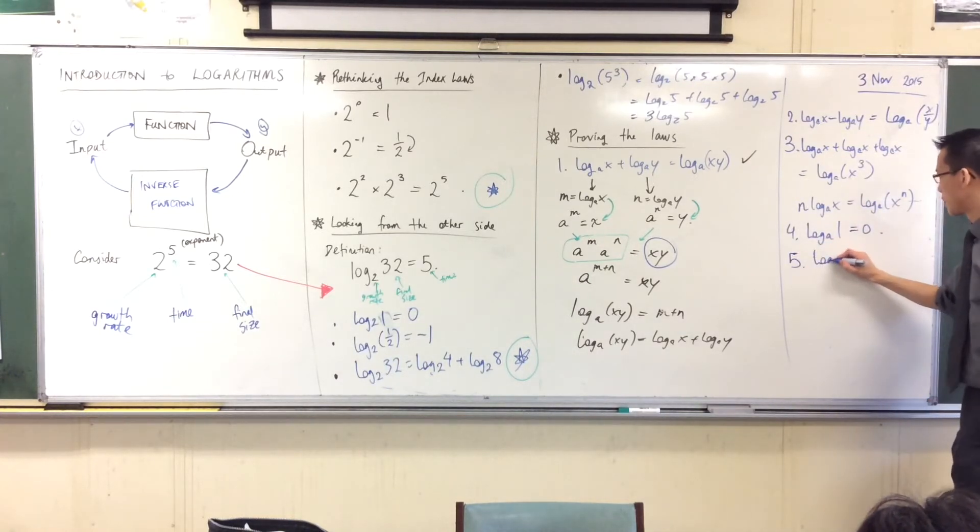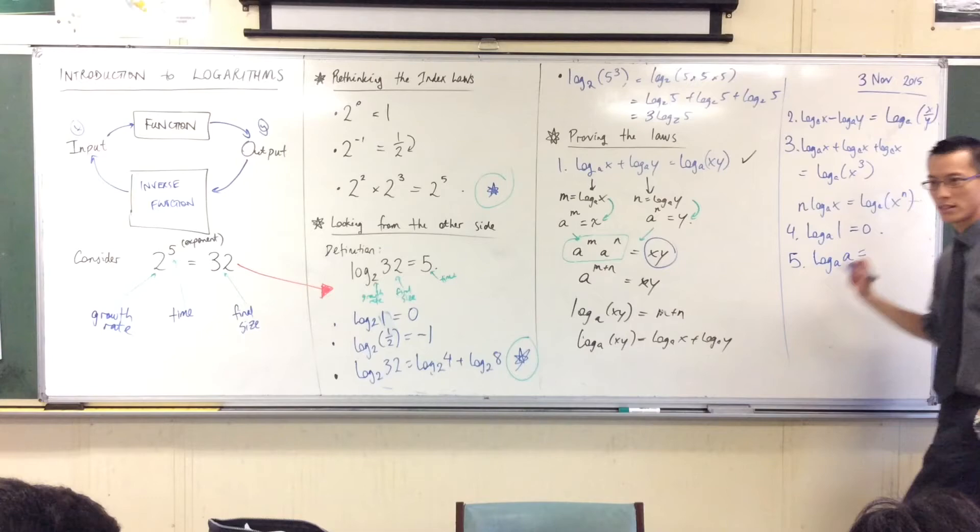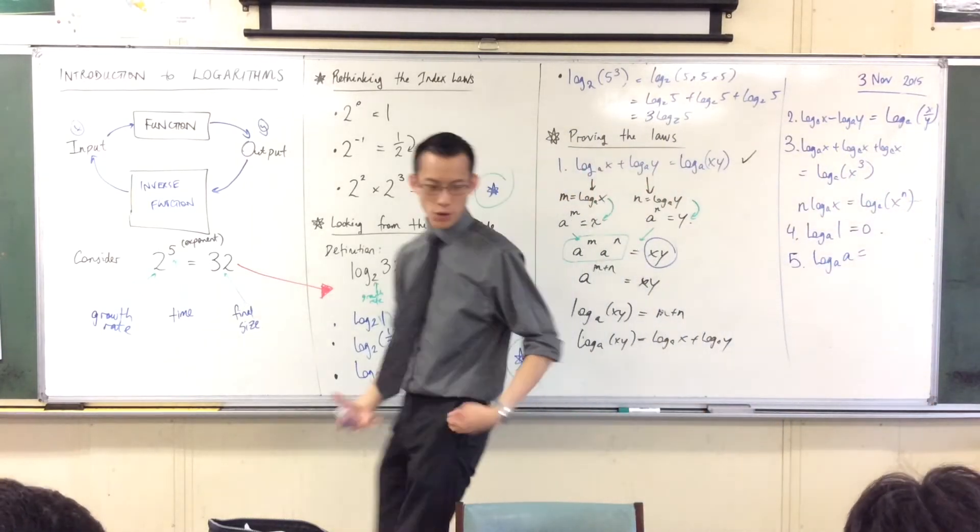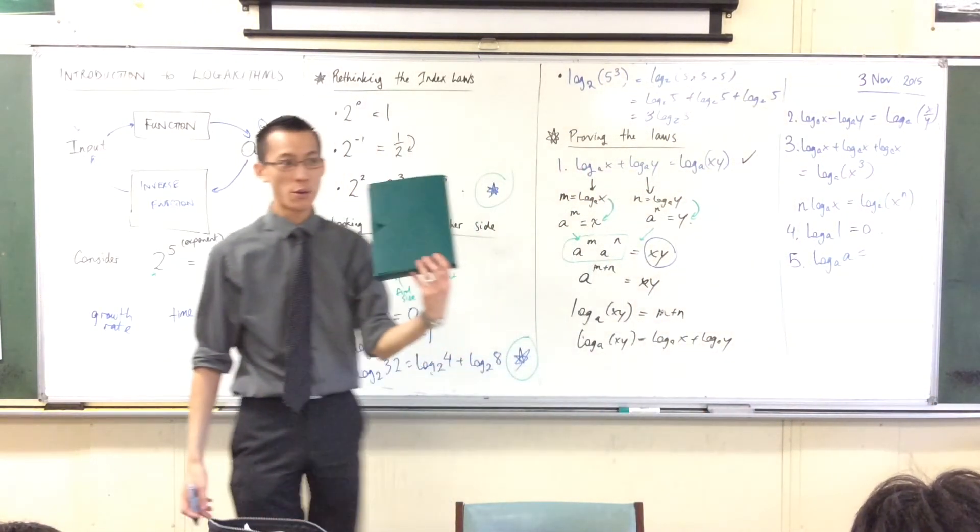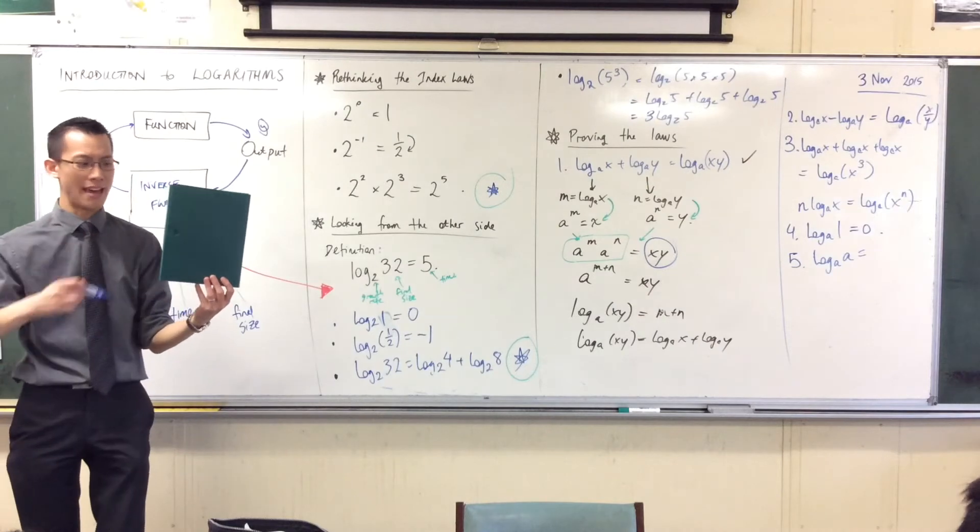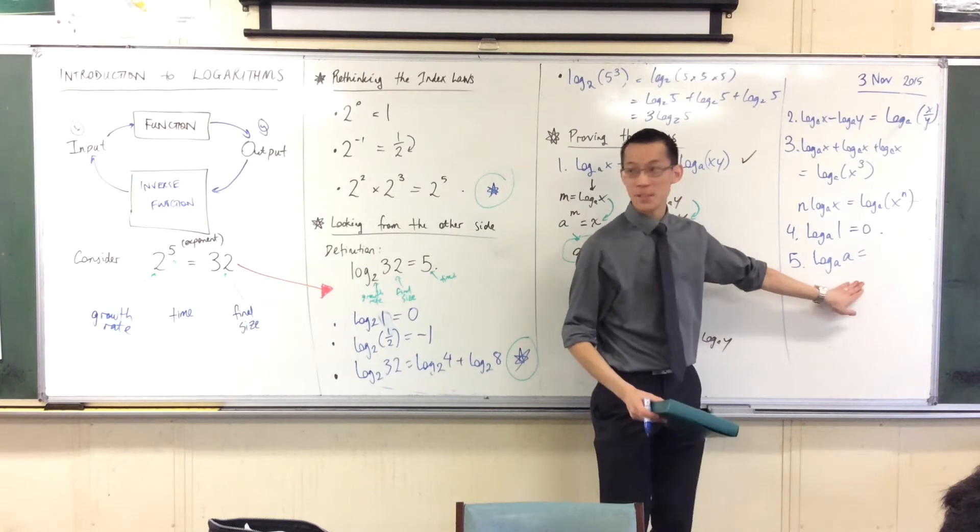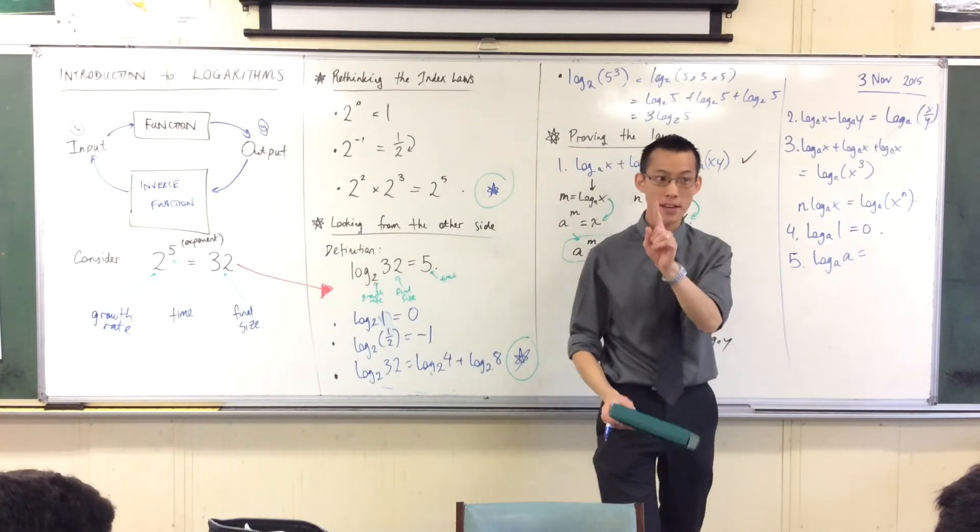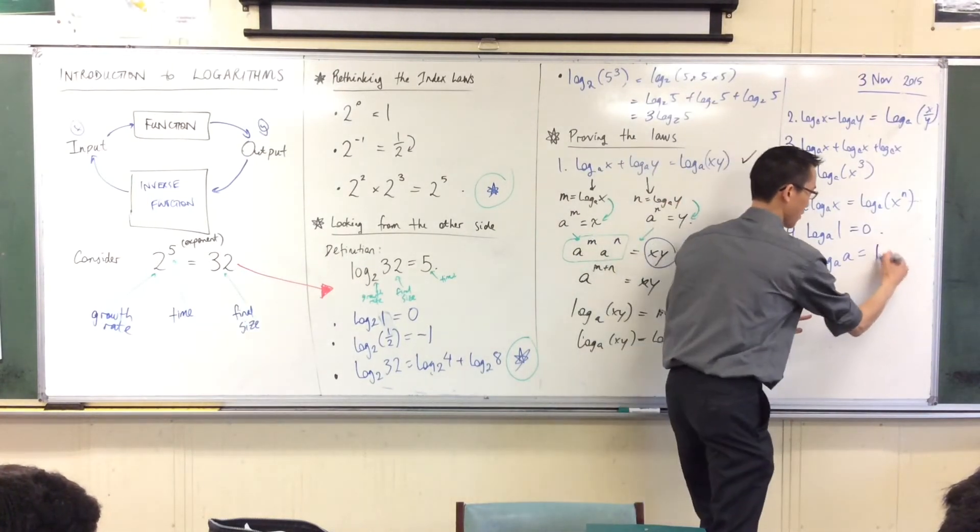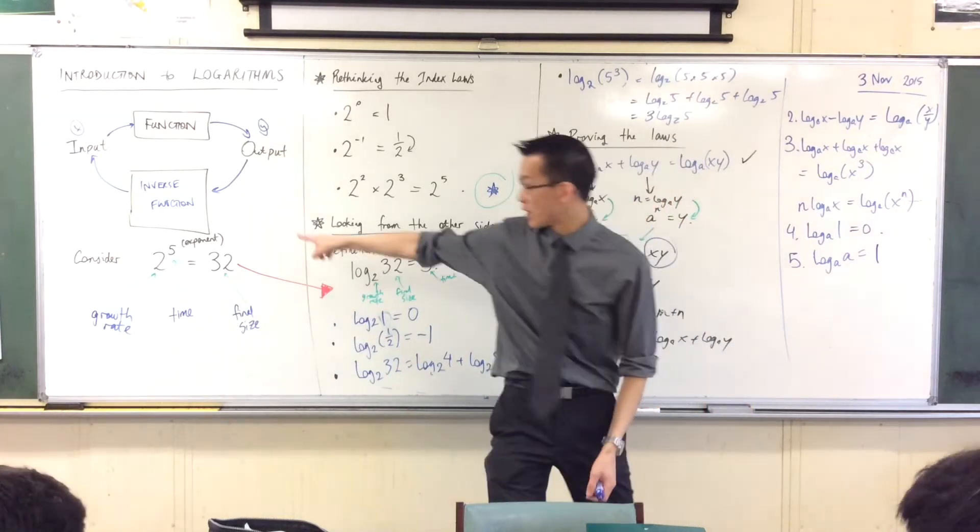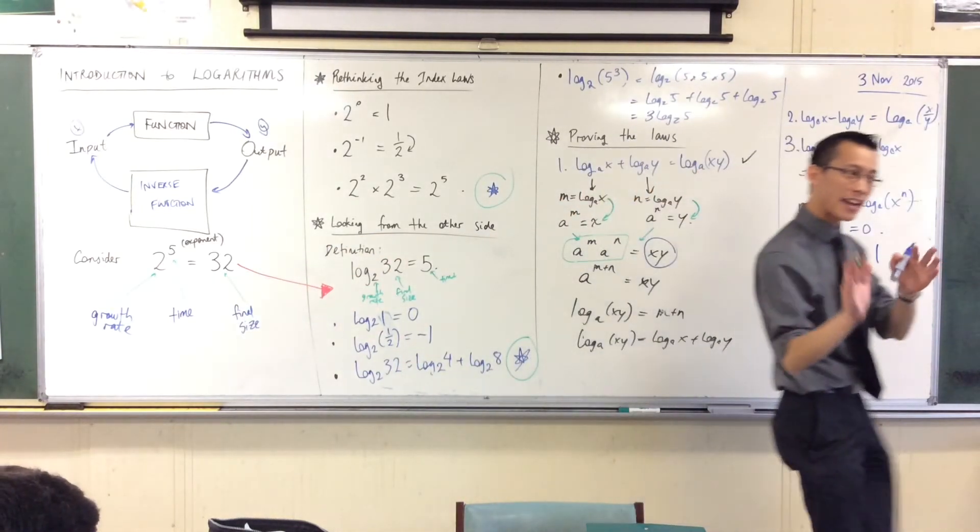You can say, here we go, log base a of a. What's that going to mean? That means you've got a growing machine. It grows at a rate of a, it's finding the object every minute, right? Well, how long will it take to get a times bigger? Answer: just that one minute, just one minute.